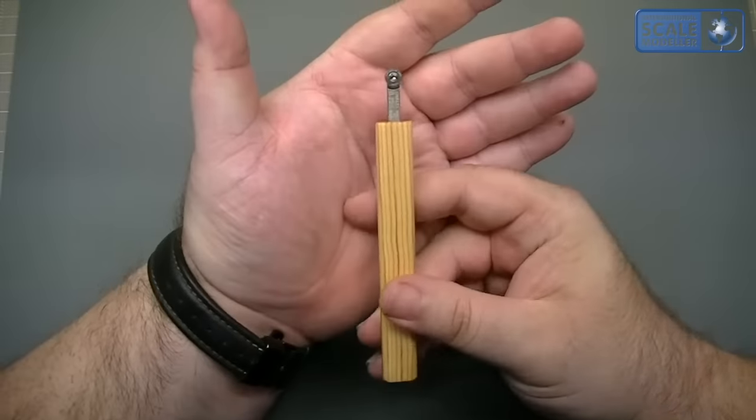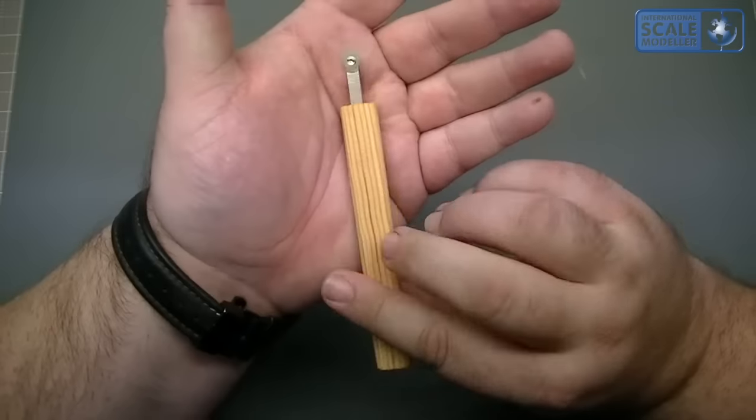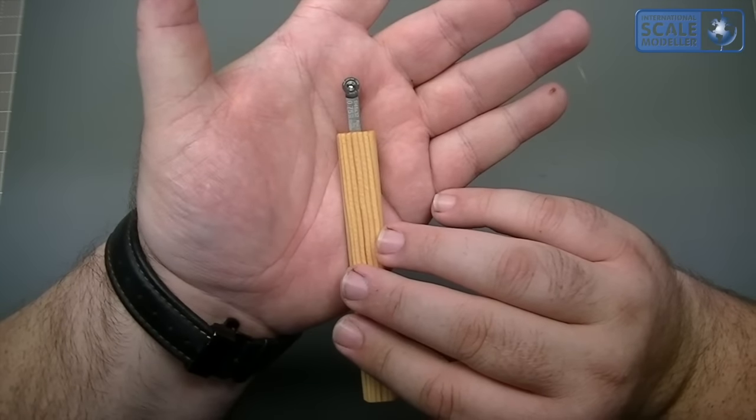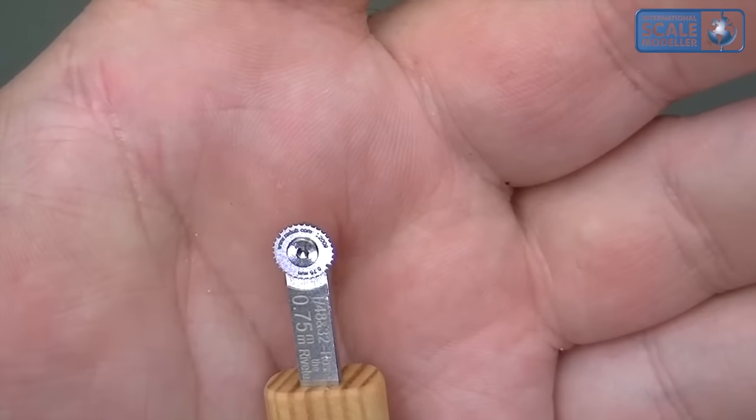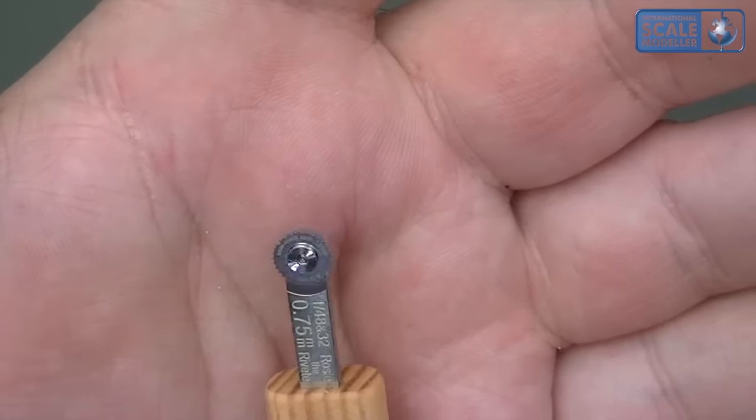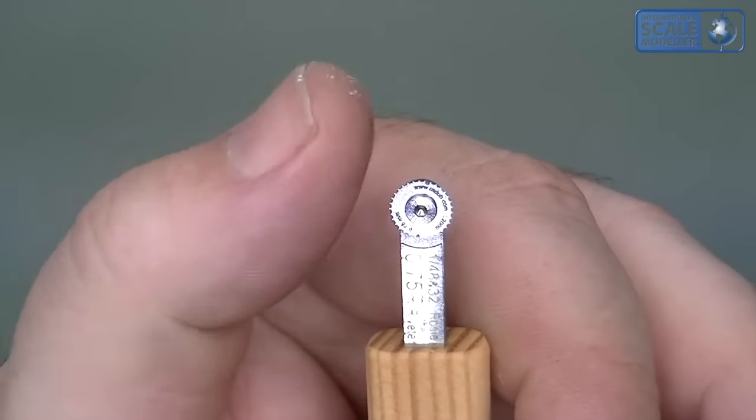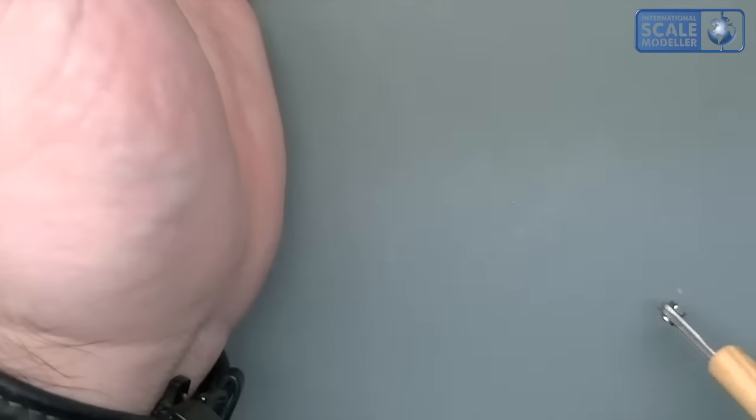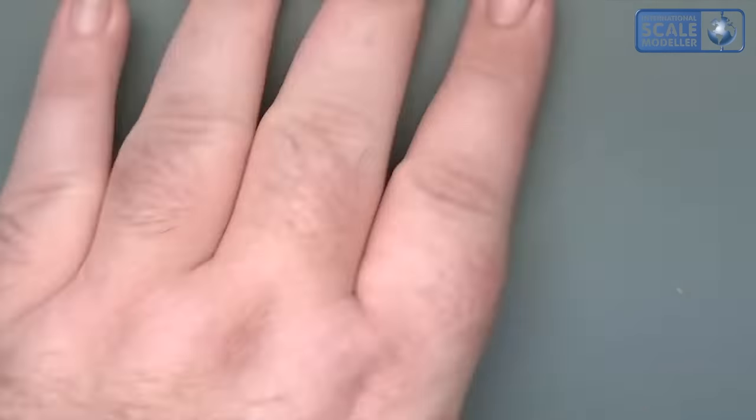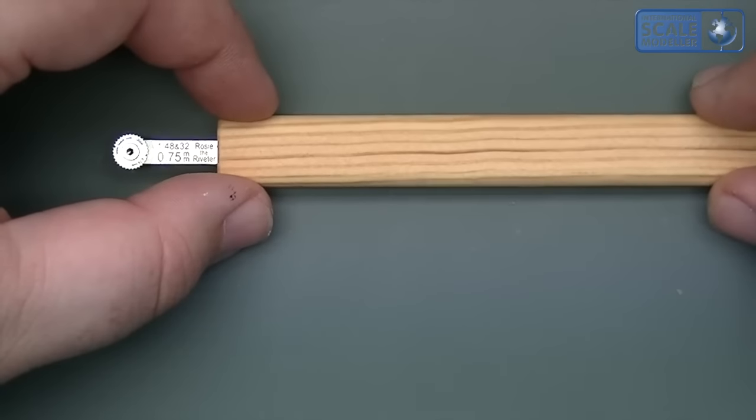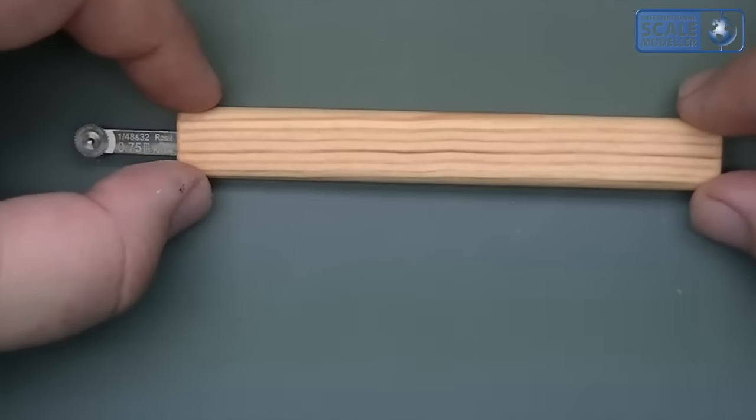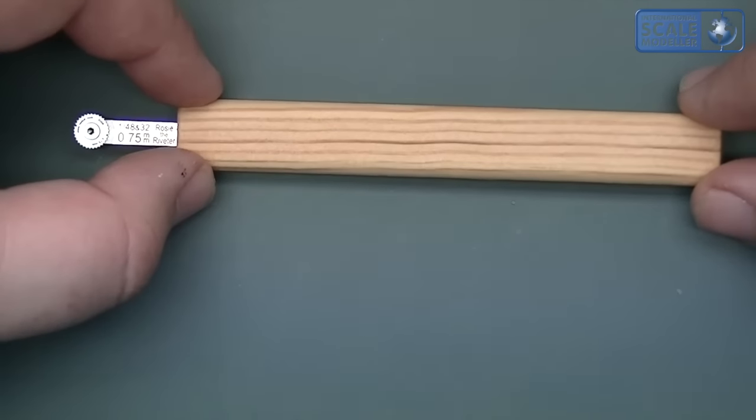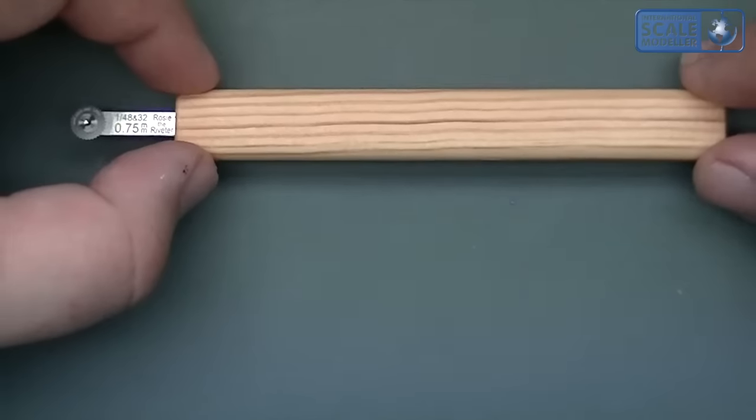So what is this for? Well this is for anything you need to re-add or completely add rivets to. It's basically a pointed wheel that moves and you can run it along and add rivets to anything that needs adding. Whether you want to completely re-rivet an aircraft or add rivets that aren't depicted on the aircraft itself, or you need to add them back in after sanding, scribing and whatnot, then this is the perfect tool.